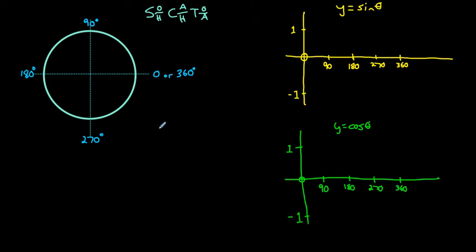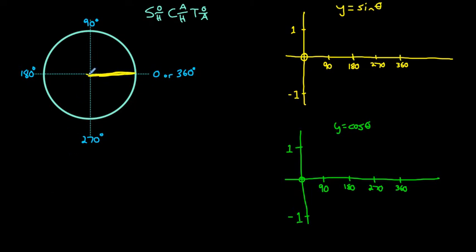So how are we going to use this unit circle to get a new relationship for the primary trig ratios? Remember that the initial arm always starts along the positive x-axis, and then our terminal arm is going to rotate counterclockwise. We could draw our terminal arm rotating some angle — we'll call that angle theta — from the initial arm in a counterclockwise direction. It's going to intersect the unit circle at some point (x, y).